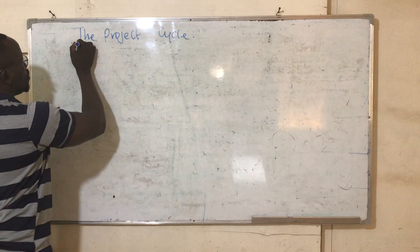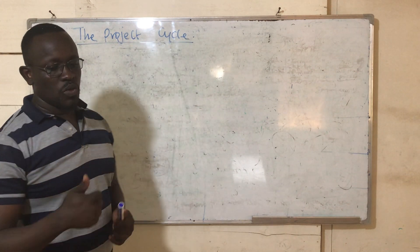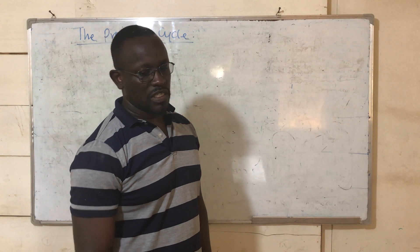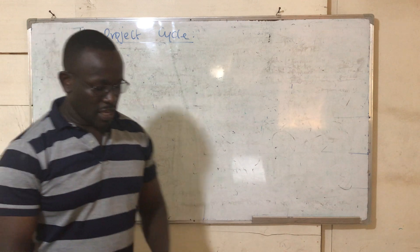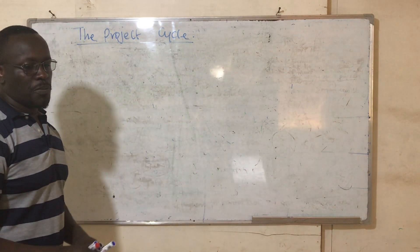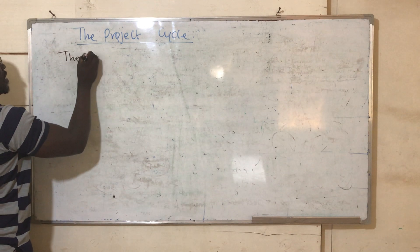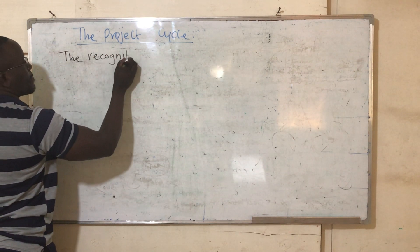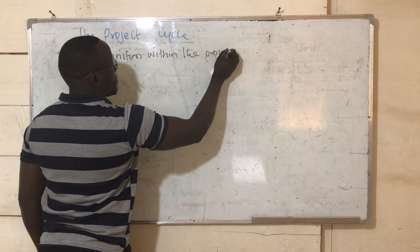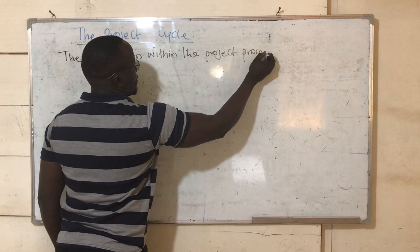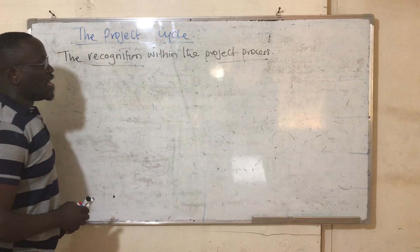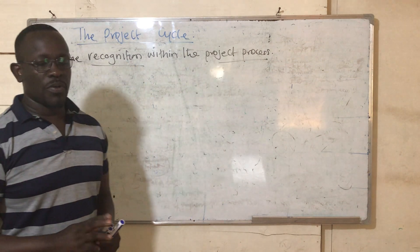The question is: how do projects evolve? From what time to what time do you say that you have a project and the project is moving? This is our second chapter. A project cycle — if I can define it — is the recognition within the project process. The main words here are 'the recognition within the project process.' As we continue this lecture, we shall understand what the word 'process' refers to.